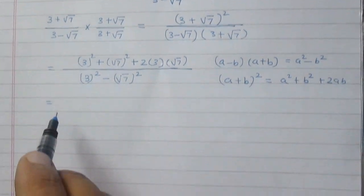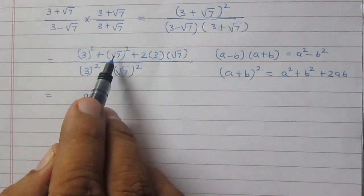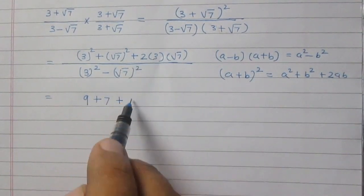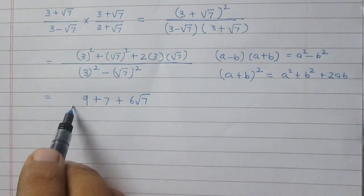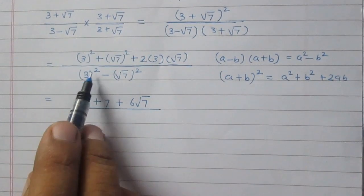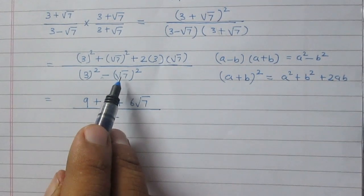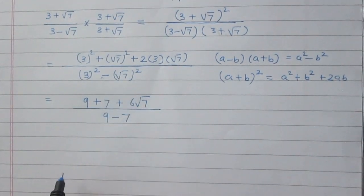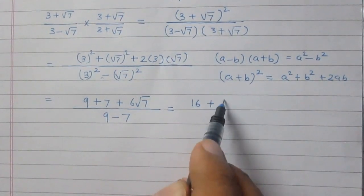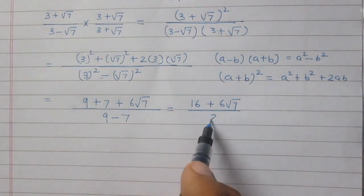Simplifying: 3² is 9, the square of √7 is 7 itself, and 2×3 gives 6, so the numerator is 9 + 7 + 6√7, which gives 16 + 6√7. For the denominator: 3² is 9 minus 7 (since (√7)² = 7), so 9 - 7 = 2.